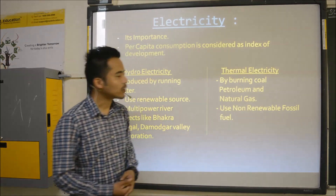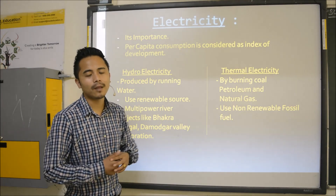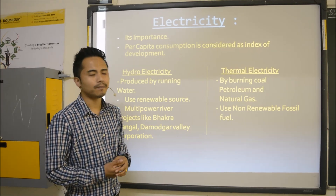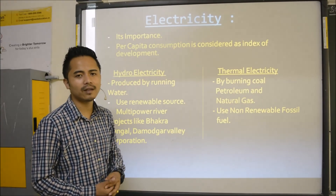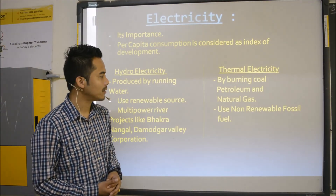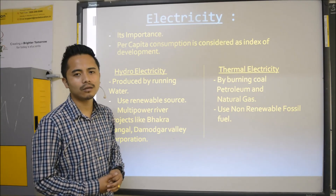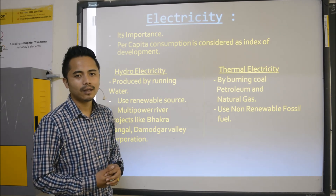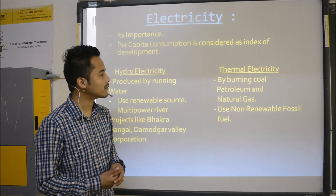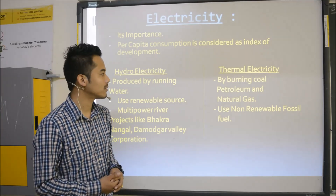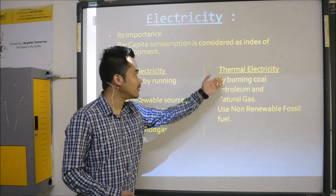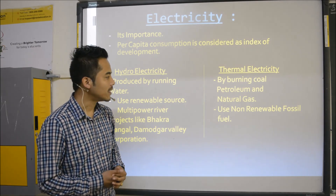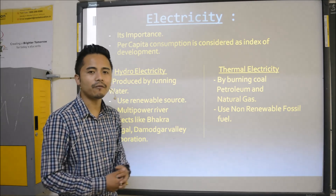Now let's complete thermal electricity. Thermal electricity is electricity which we gain from burning coal, petroleum, etc. By burning coal and petroleum, it is very unfriendly to the environment — it can destroy the ozone layer or emit lots of carbon dioxide which can harm people, and it can pollute the air. Thermal electricity is non-renewable — it is made up of non-renewable resources which can become extinct if we use them in a careless manner.